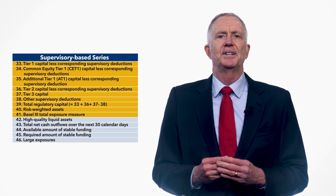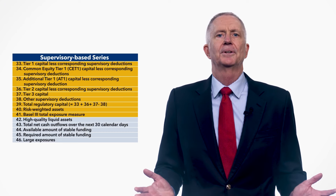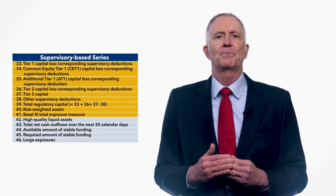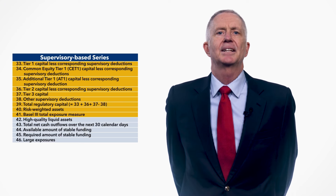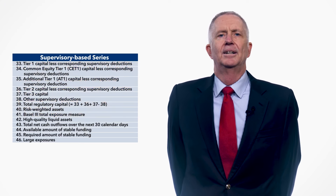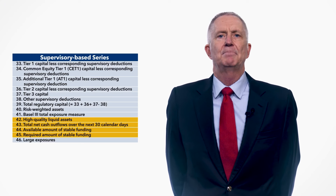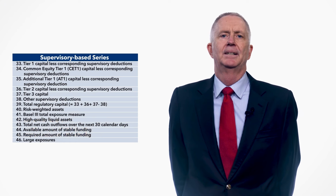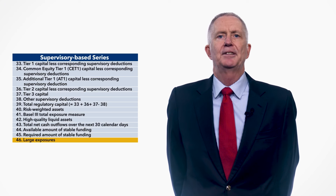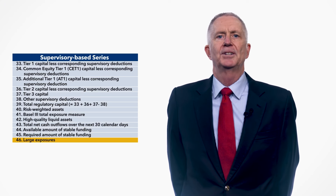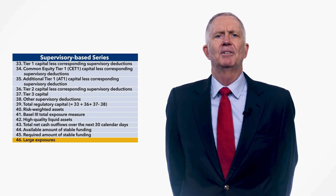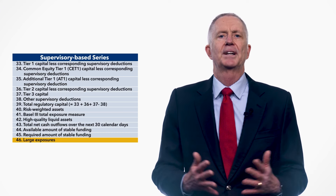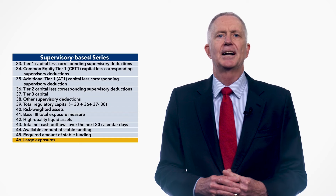Nine of the supervisory-based series have definitions drawn from the various versions of the Basel Capital Accords. These include all of the elements of capital and two measures of risk exposure: risk-weighted assets and the Basel III exposure measure. These series provide data necessary to calculate the capital-related FSIs. Four of the supervisory-based series are drawn from the liquidity standards introduced in Basel III, comprising data necessary to compile the liquidity coverage ratio and the net stable funding ratio. The last supervisory-based series is large exposures, defined as the sum of all exposures of a deposit taker to a counterparty or a group of connected counterparties which individually exceed 10% of Tier I capital. This series is required to compile the additional FSI large exposures to capital.